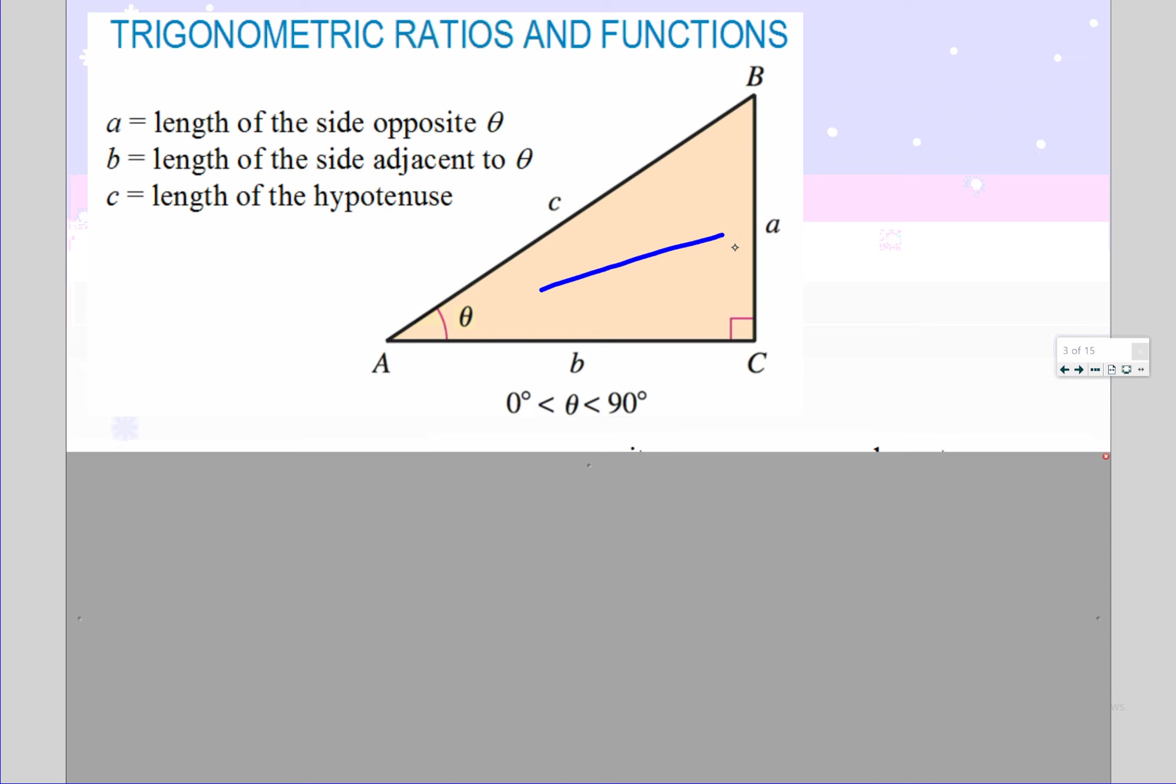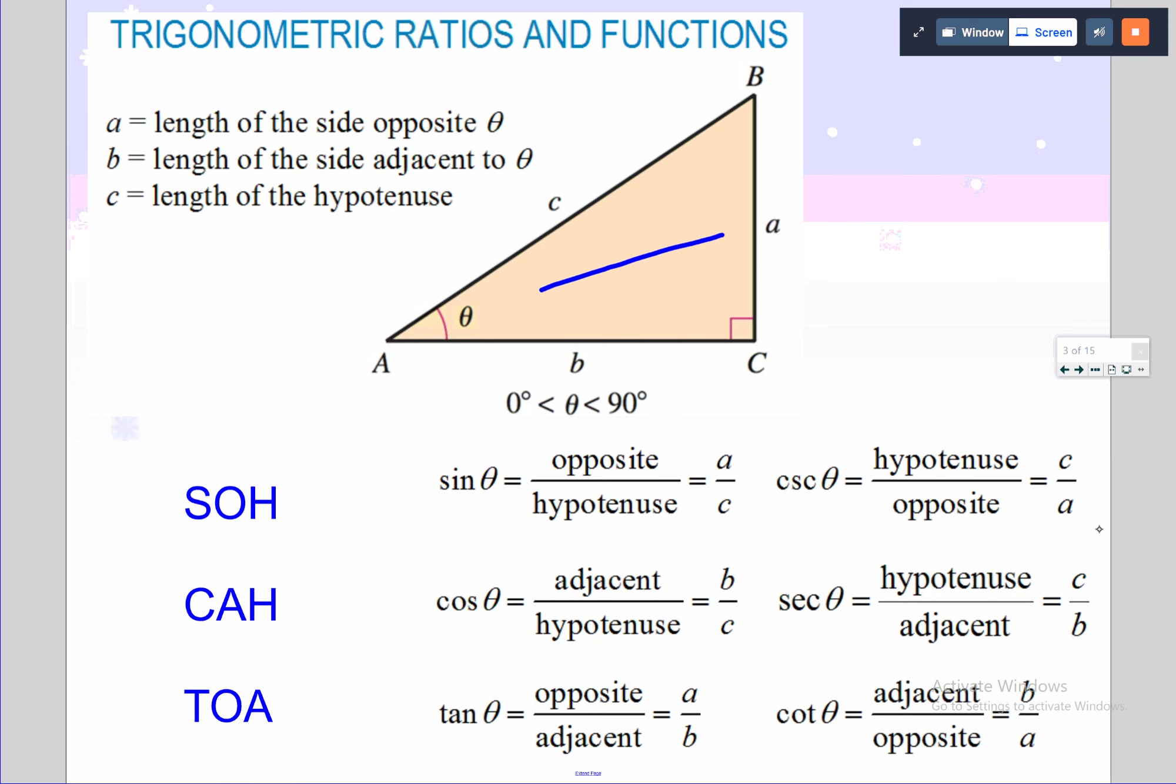Most of the time when our book has us draw a right triangle, they'll tell you what the right angle is. Most of the time if they use an ABC, it's going to be C. So they'll say a right triangle with right angle C and give you some information. We will eventually get to the point where everything won't be a right triangle, but most of the stuff we're going to do in this chapter will be.